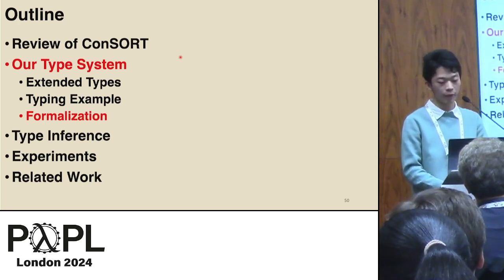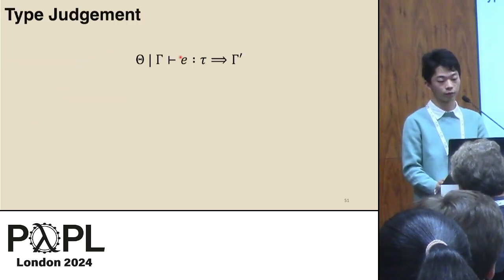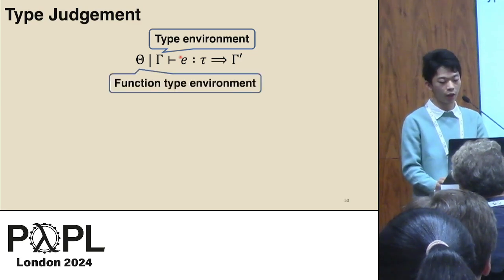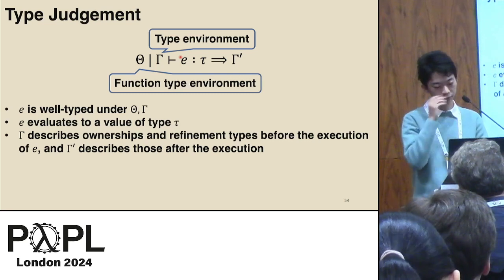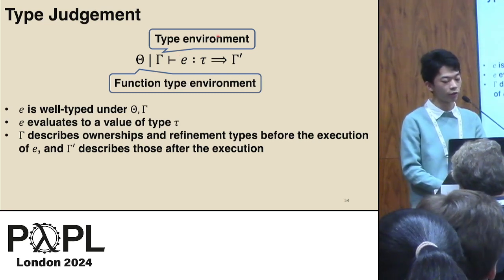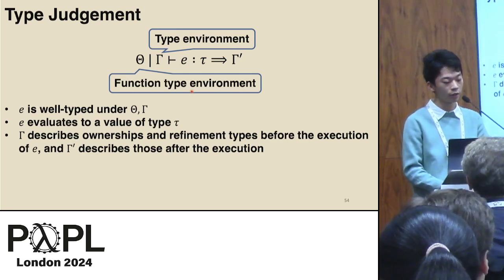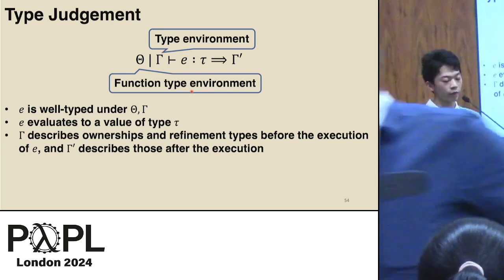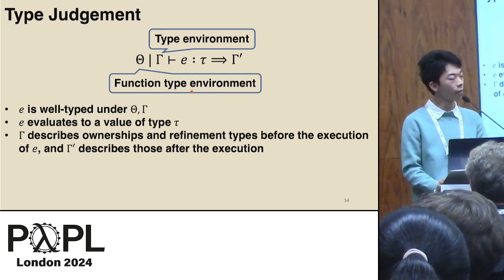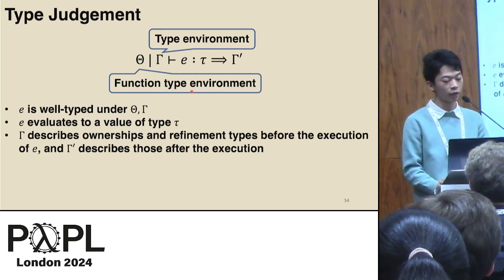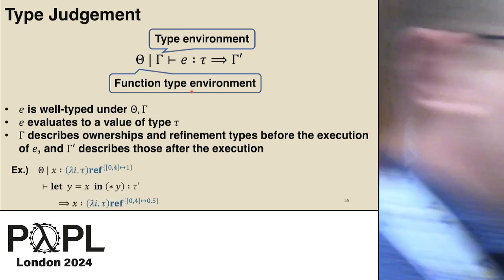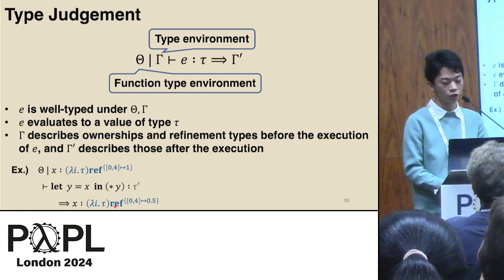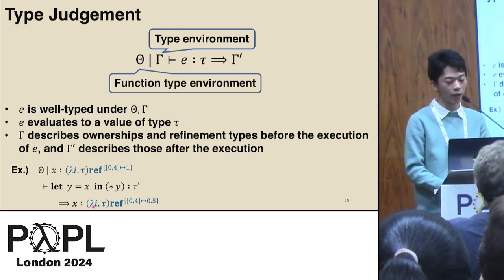Next, I will introduce the formalization of our type system. A type judgment is formed where gamma is the type environment and theta is the function type environment. This type judgment means that the expression E is well-typed under theta and gamma, and the expression E evaluates to a value of type tau. Gamma describes ownership and refinement types before the execution of E, and gamma prime describes those after the execution. For example, before execution, x has full ownership from index 0 to 4, and after executing let y equal x, ownership is divided into y.